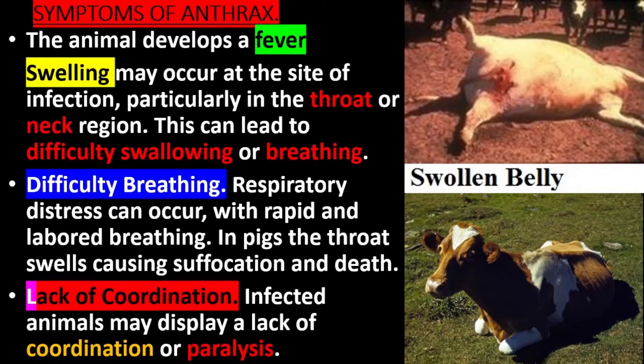Symptoms of Anthrax: The animal develops a fever. Swelling may occur at the site of infection, particularly in the throat or neck region. This can lead to difficulty swallowing or breathing. Respiratory distress can occur with rapid and labored breathing. In pigs, the throat swells causing suffocation and death.